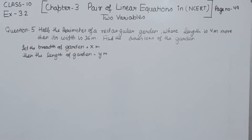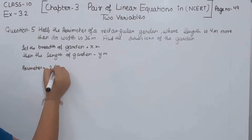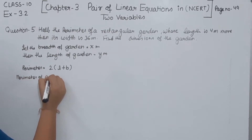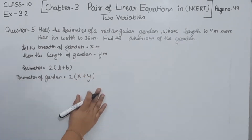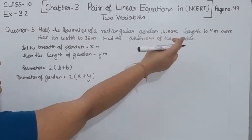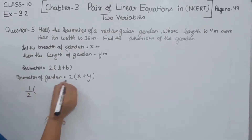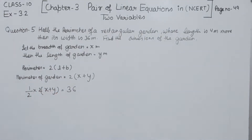Now in the first statement, we are having half the perimeter of the rectangular garden. The perimeter formula will have 2 multiplied by (L + b). So the perimeter of the garden is 2 multiplied by length x and breadth y. The first statement says half the perimeter equals 36 meter, so half multiplied by (2x + y) is equal to 36 meter.